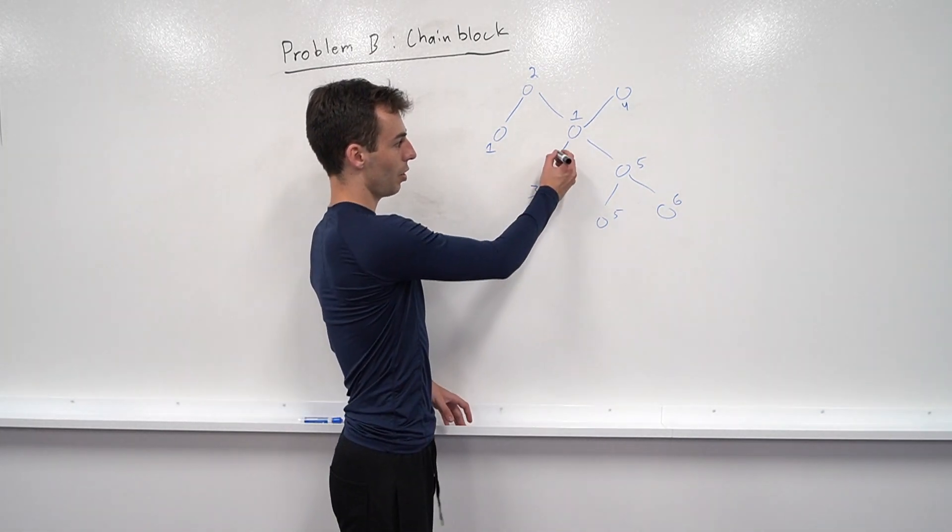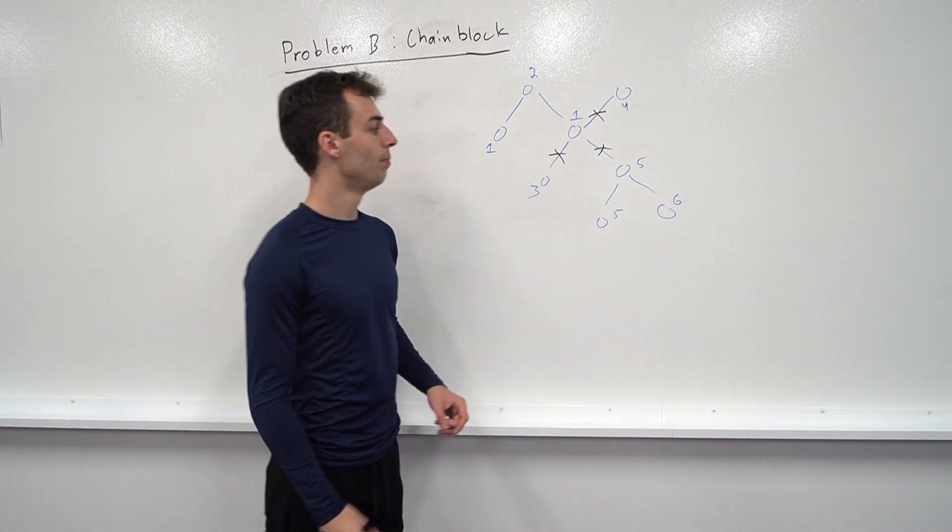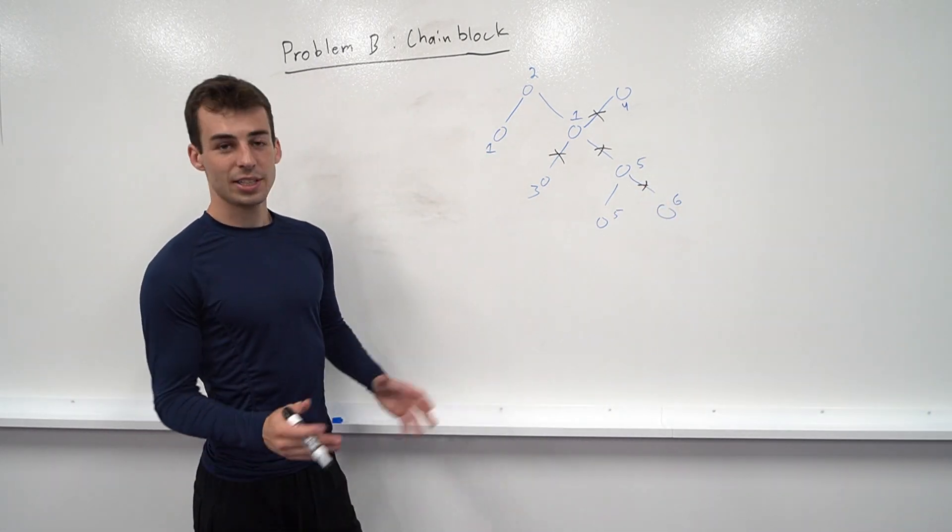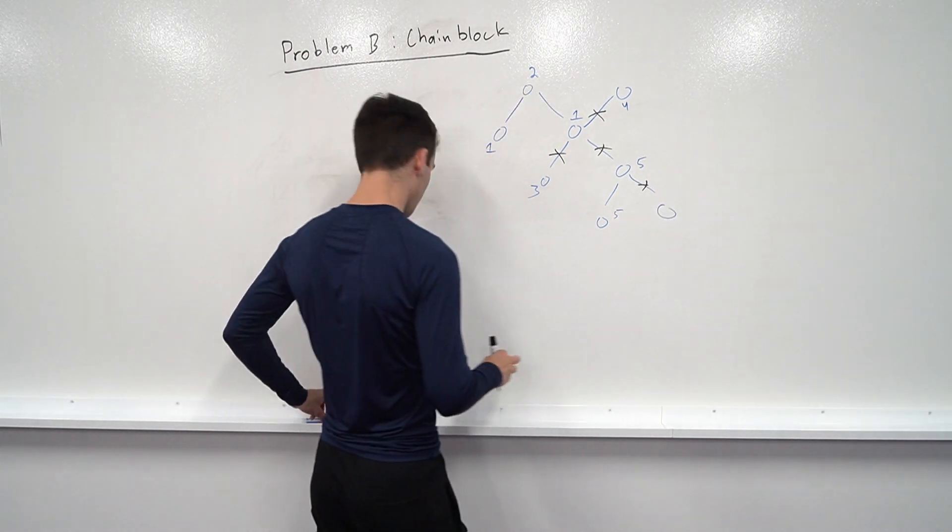In this example, we would want to destroy this edge here, this edge here, and this edge here. And then also we can destroy this edge here too. We might have a slightly more complicated example though. Maybe instead of this being a 6, we had a 2 here.